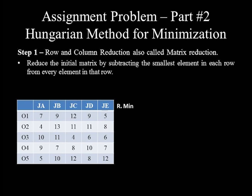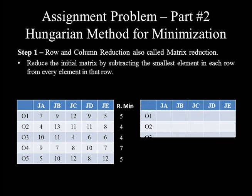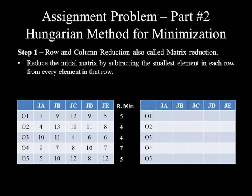The minimum value in row 1 is 5, row 2 minimum is 4, row 3 minimum is again 4, row 4 minimum is 7, and row 5 minimum is 5. Let's copy a blank table on the right-hand side to carry out row reduction calculations. For row 1: 7−5=2, 9−5=4, 12−5=7, 9−5=4, and 5−5=0.